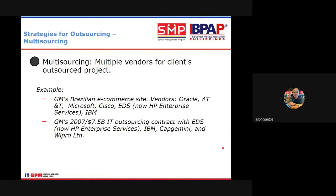Now let's look at them one by one and see the examples. Multi-sourcing — from the term itself, 'multi' means multiple — there are multiple vendors for a client's outsourced projects. So if we are outsourcing a project, like a call center, we don't have just one partner. If you recall, we have the third-party type of outsourcing, where they serve multiple clients. Now let's look at it from the side of the client. As a business owner, hiring different third-party companies — that is multi-sourcing.